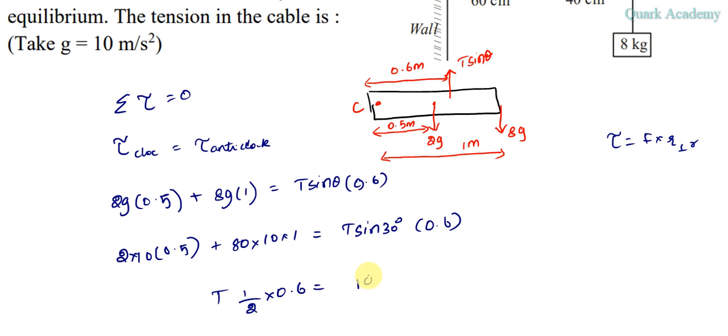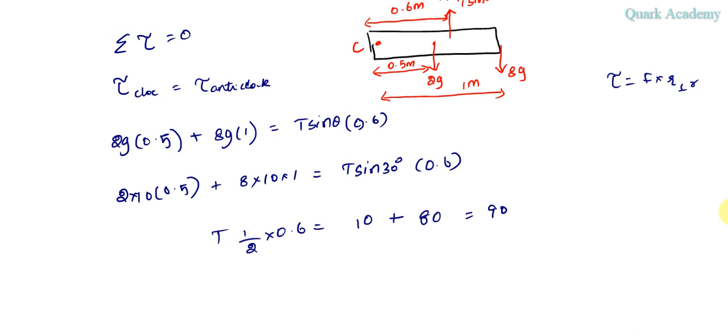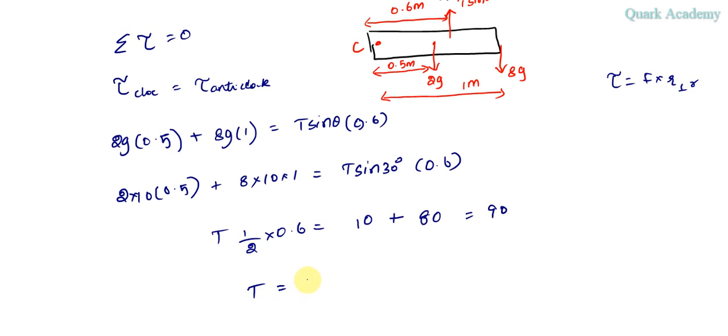Which is equal to, 0.6 is equal to 10 plus 80. So 10 plus 80, which is 90.